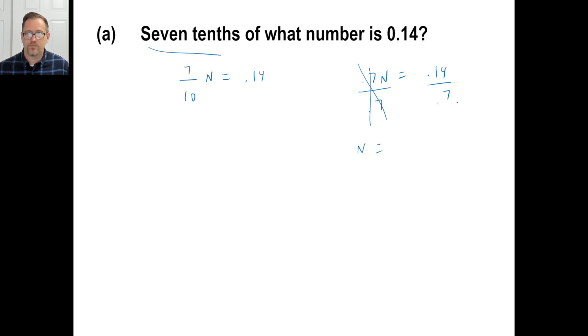N is equal to 0.14 divided by 0.7. Let's do it. 0.7 into 0.14. And move this over one time. Move this over one time. And that gives us 7 into 1.4. And 7 into 14 is 2. That's it. That's all. 0.2. N is equal to 0.2. There you go. That's all there is to it.